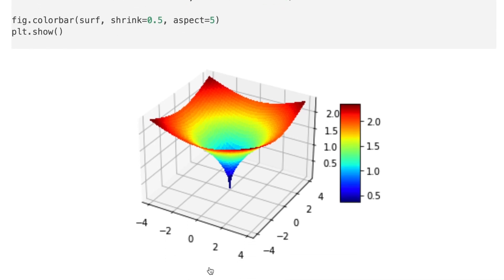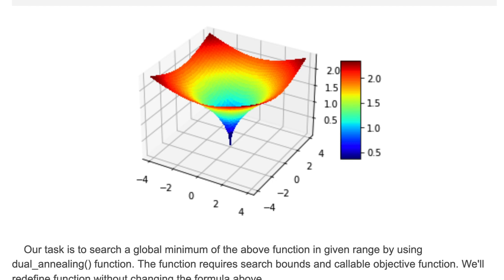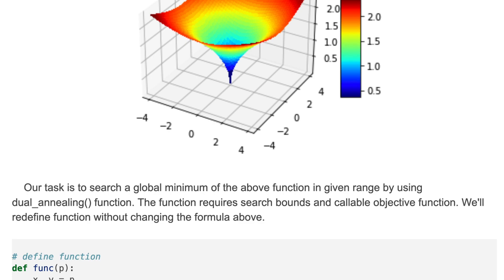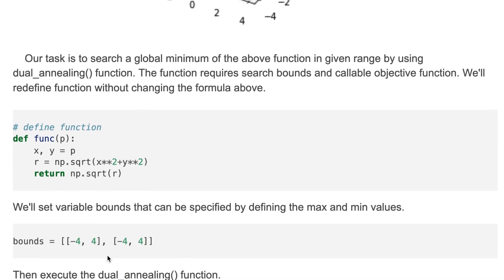Here is the target function, and here we search for a global minimum of the above function in a given range by using the dual annealing function. The function requires search bounds and a callable objective function. We'll redefine the function without changing the formula above. Here is the callable objective function.